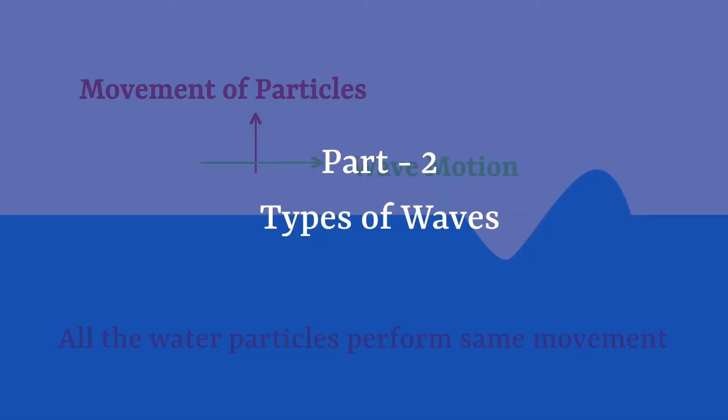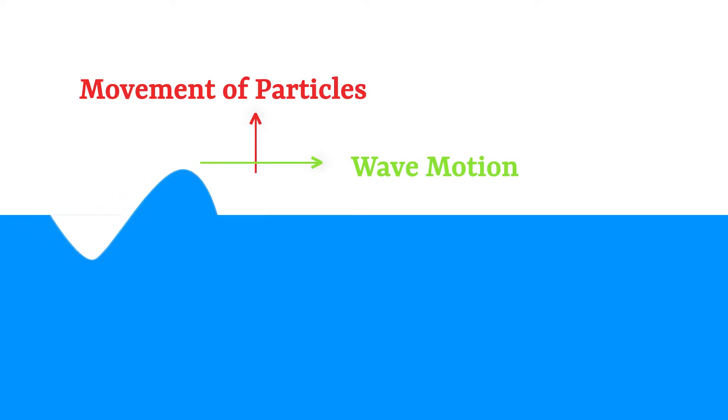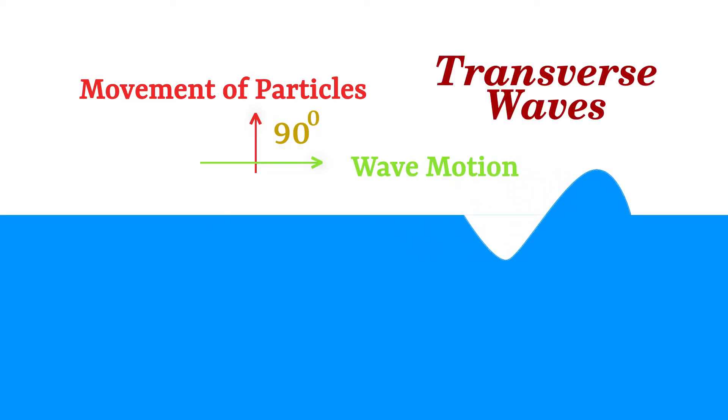Part 2: What are the types of waves? In this wave motion, the movement of a particle is perpendicular to the direction of wave propagation. Such waves are called transverse waves.